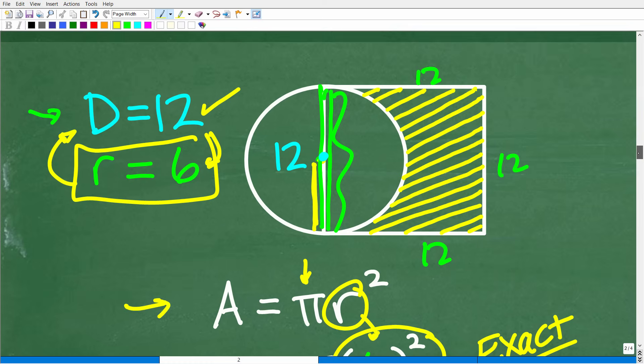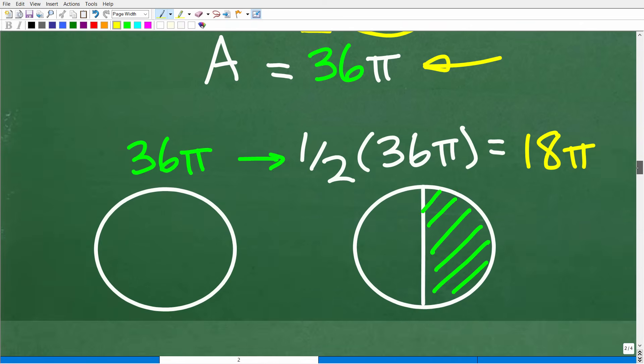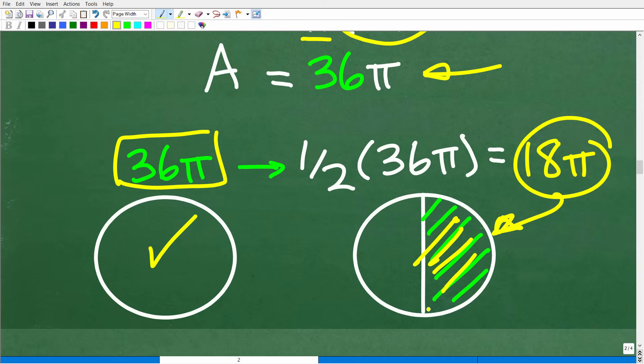So all we've done so far is find the area of the entire circle. Remember, that's not part of our strategy. What we need to do is find the semicircle. So we can't find the semicircle until we find the entire circle. So our entire area for our entire circle is 36 pi. So we're just going to take that and divide it by one, or times one half, or divide it by two. So one half times 36 pi is 18 pi. And this now is the exact area of the semicircle.